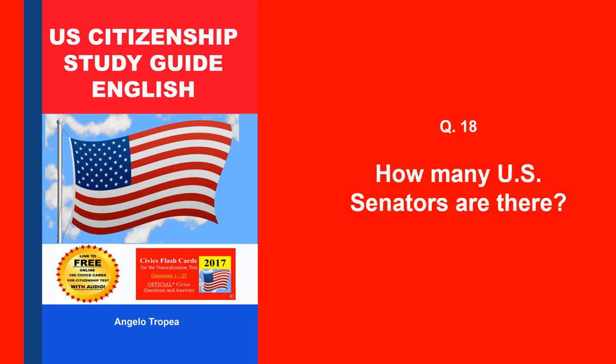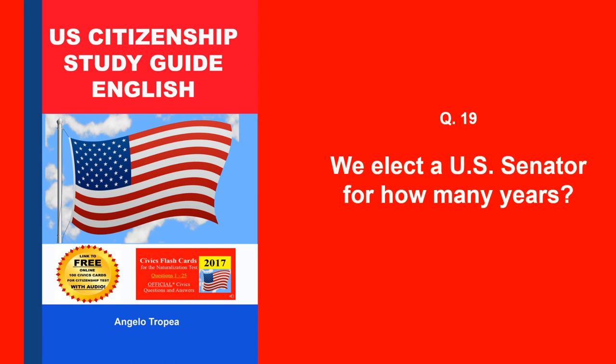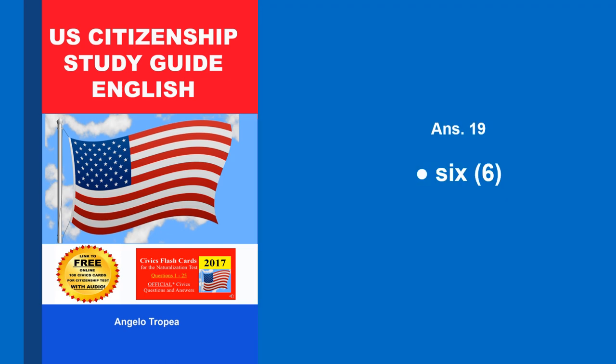How many U.S. Senators are there? One hundred. We elect a U.S. Senator for how many years? Six.